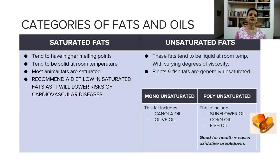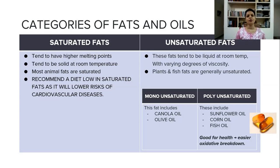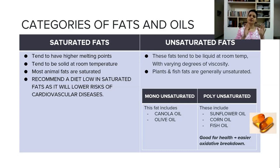Fats are categorized into saturated and unsaturated fats. Saturated fats are solid at room temperature, have a higher melting point, and are found mainly in animal sources. They should be recommended in low doses in our diet because excess consumption causes a cholesterol layer on the inner walls of arteries, causing them to narrow — called arteriosclerosis — which increases the risk of cardiovascular diseases like heart attack or angina.